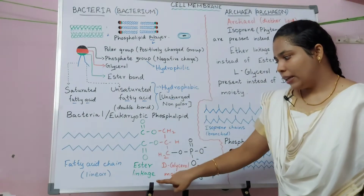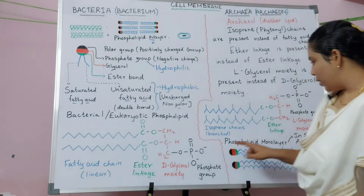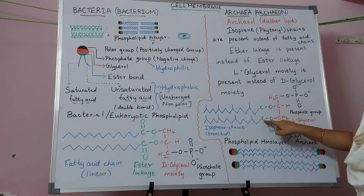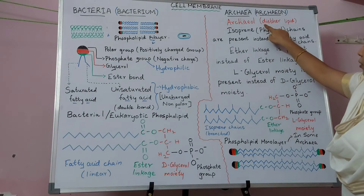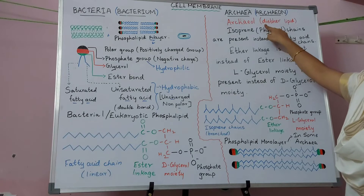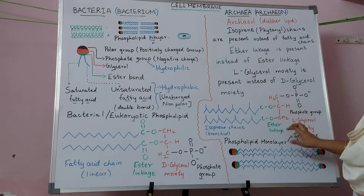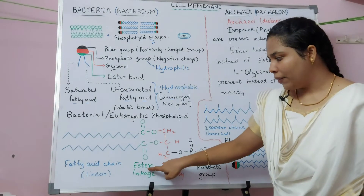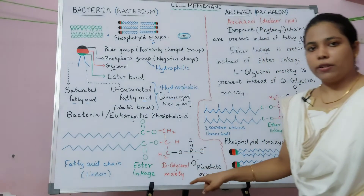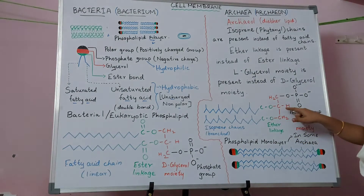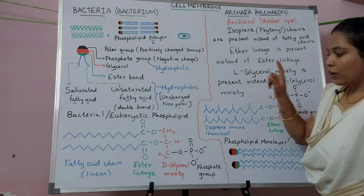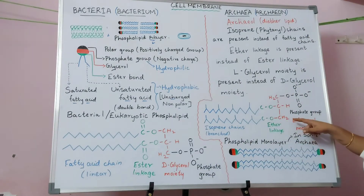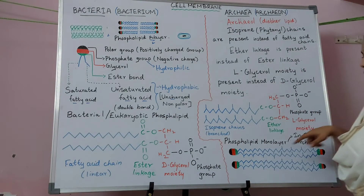In bacteria, an ester linkage connects glycerol and fatty acid, whereas in archaea an ether linkage is used. Because there are two ether linkages, it is referred to as a diether lipid. The glycerol backbone also differs: in bacteria it is a D-glycerol moiety, while in archaea it is an L-glycerol moiety.